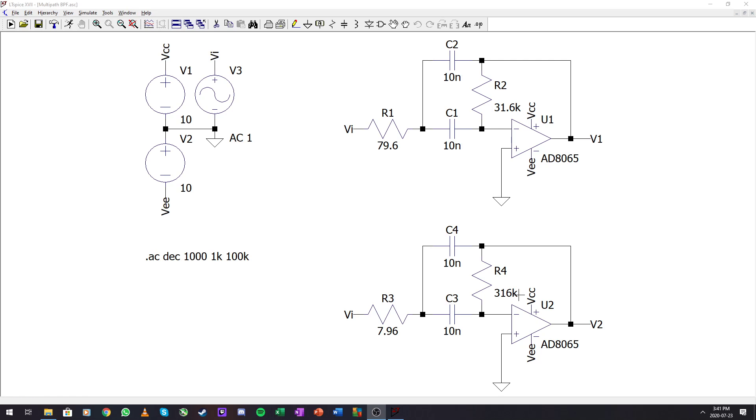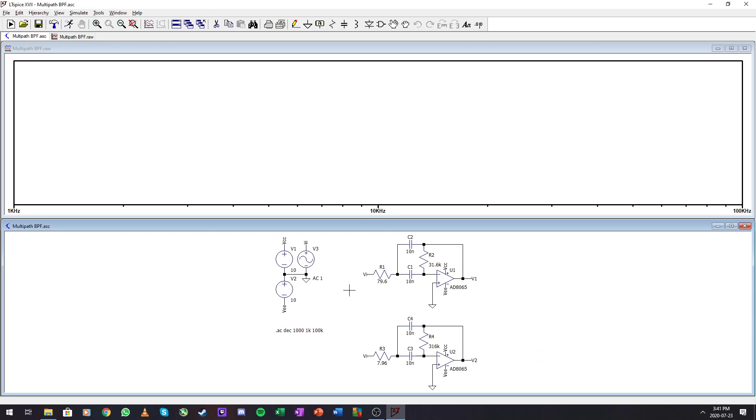Here I have our two multi-feedback filters set up. I had to select a different op-amp for these problems because the gain required is so high. The AD8065 has extremely high bandwidth—135 MHz gain-bandwidth product—so it will be sufficient for these. Let's run this simulation.